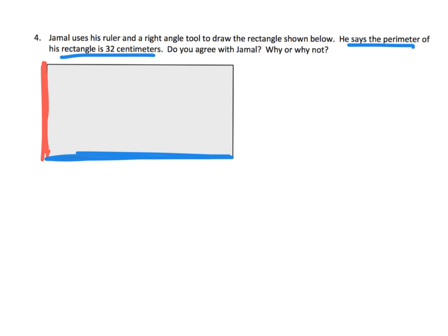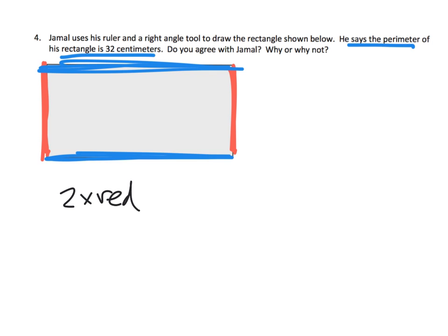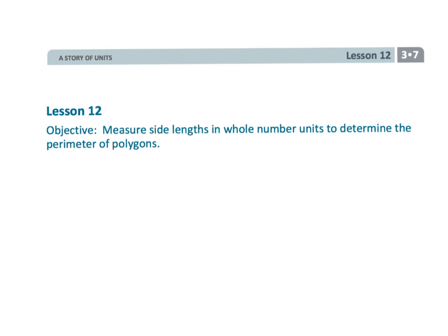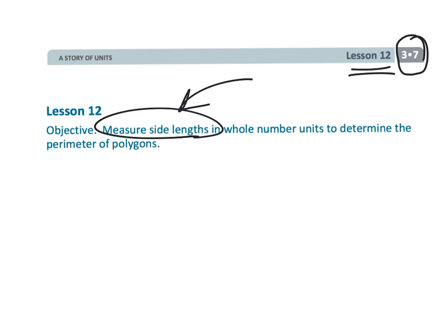The two red sides are equal, so measure one and multiply by two. The two blue sides are equal, so measure one and multiply by two. A shortcut formula would be: 2 times the red length plus 2 times the blue length. That wraps up this engaging lesson — grade 3 module 7 lesson 12, where students use rulers to measure the lengths of figures and find the perimeter.